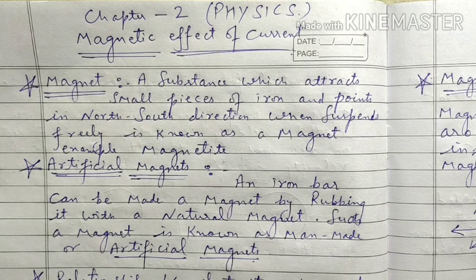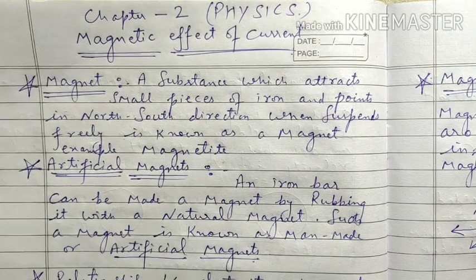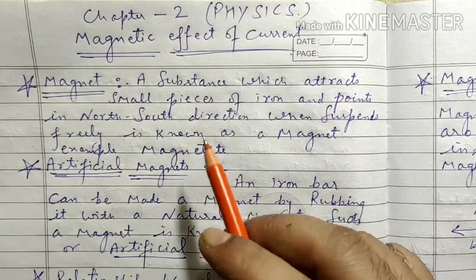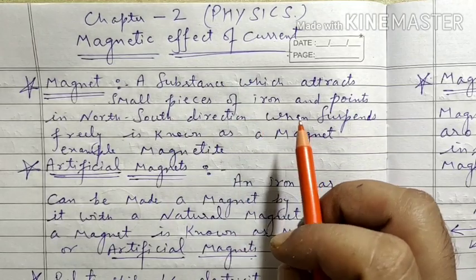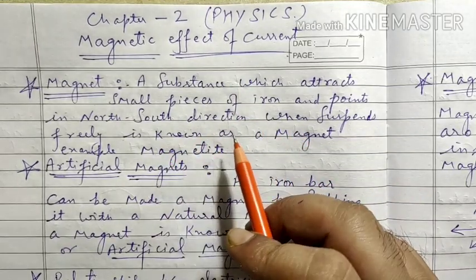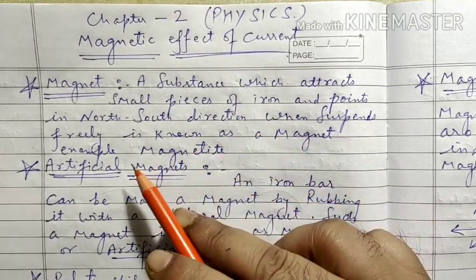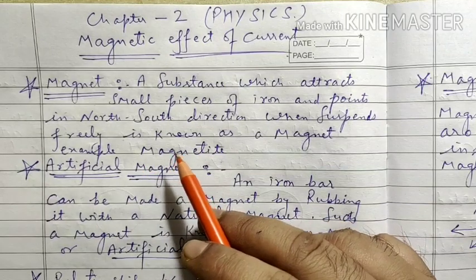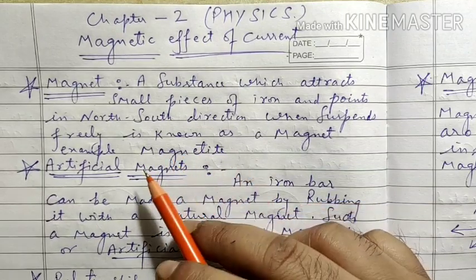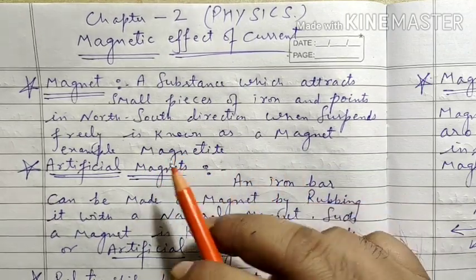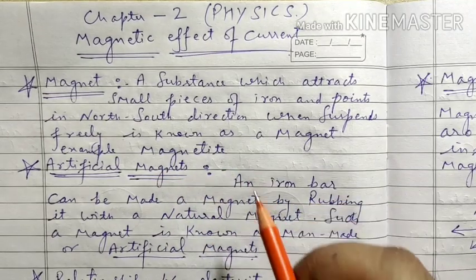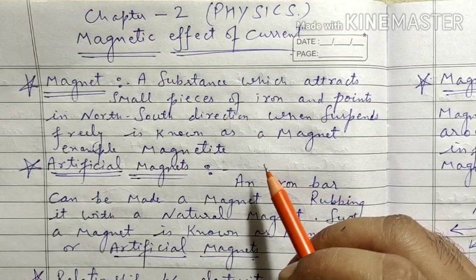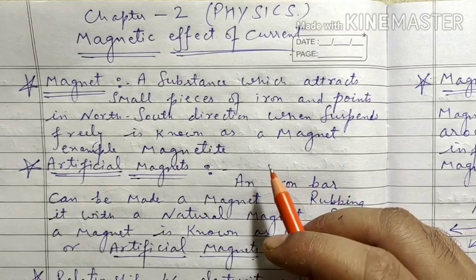First of all, what is a Magnet? A substance which attracts small pieces of iron and points in the north-south direction when suspended freely is known as a Magnet. An example is Magnetite, which we also call Lodestone. Lodestone is a natural Magnet.